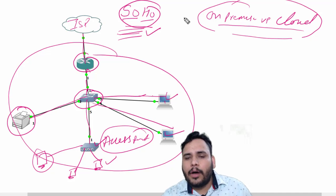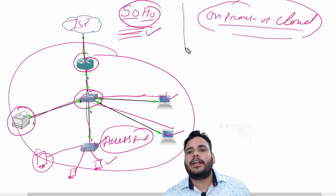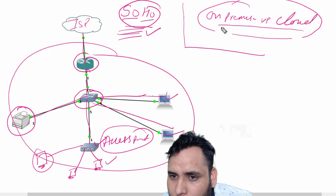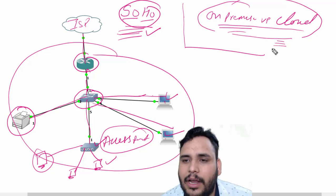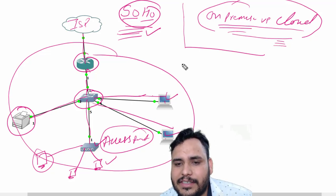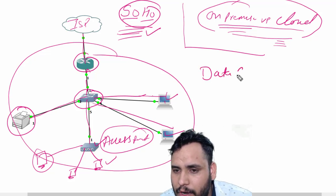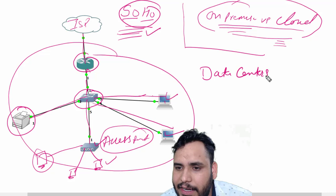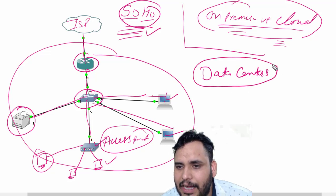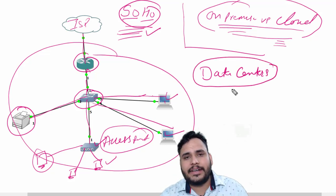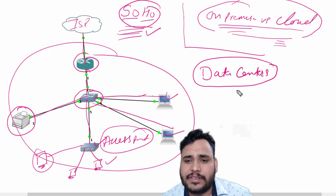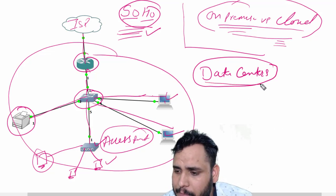And one more topic that is pending in our network design is on-premises versus cloud. Like we discussed about the WAN architecture. Like in WAN, we are working on data centers. Data centers are like the servers where your routers and switches are going to connect with each other with the help of data centers.